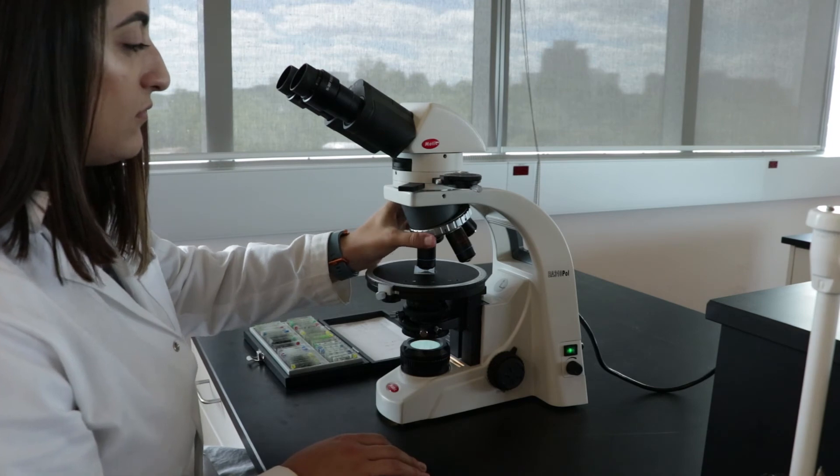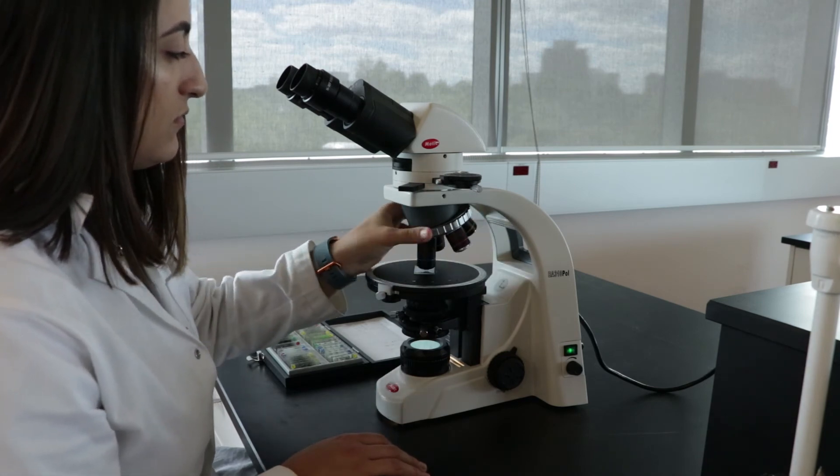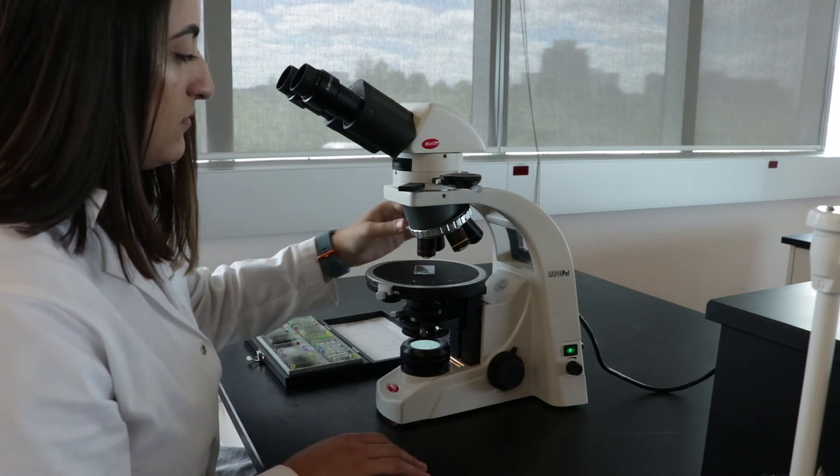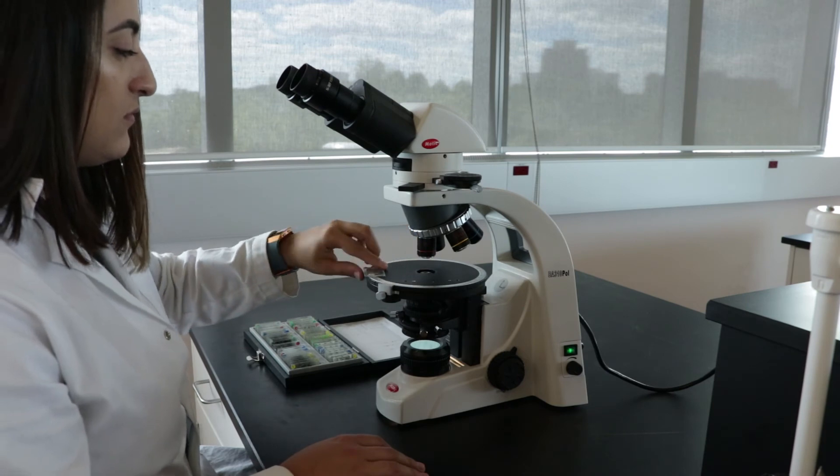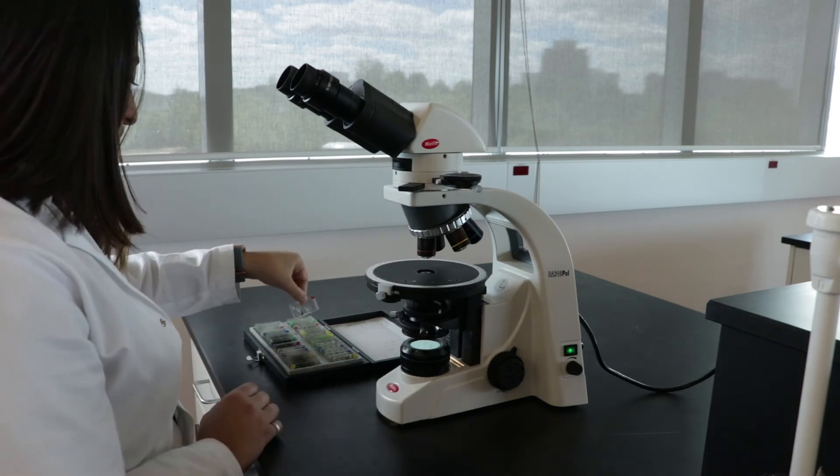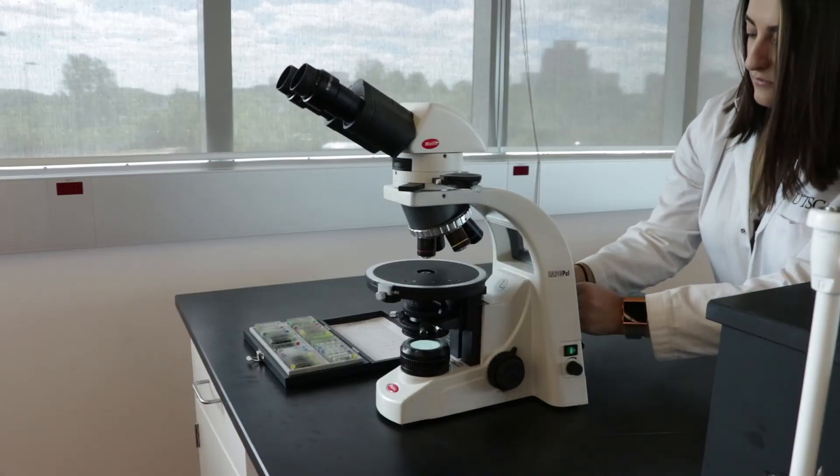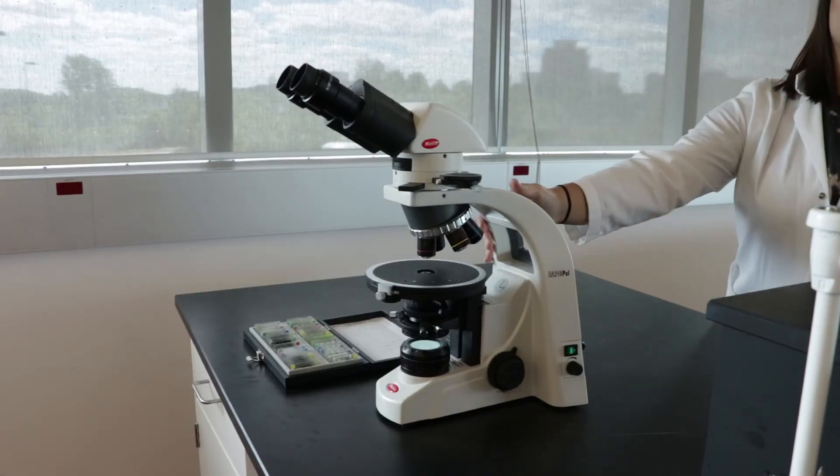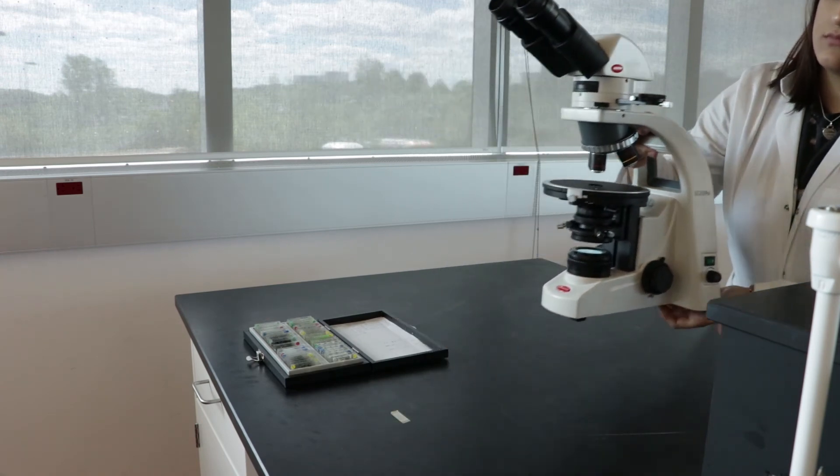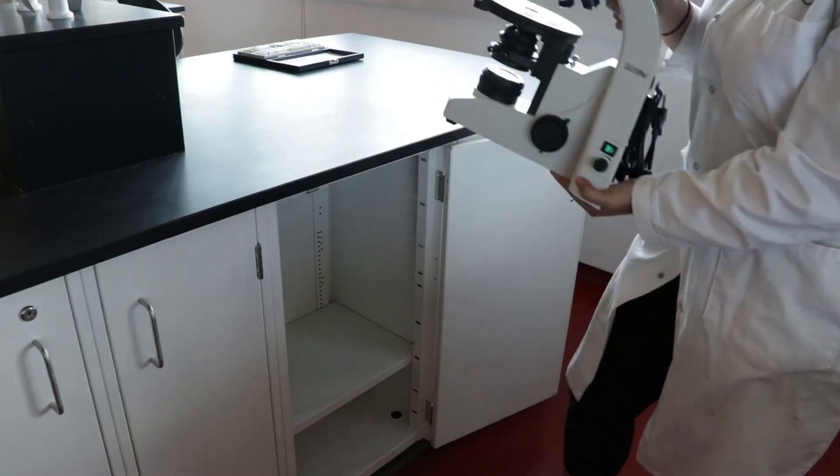When you're finished with the microscope, move the objective back to the four times setting. Take the slide off the stage and put it back in the thin section box. Turn off the microscope and unplug it. Finally, wrap the cord around the base and carefully store the microscope in the locker. Again, use the back part of the microscope when moving it.